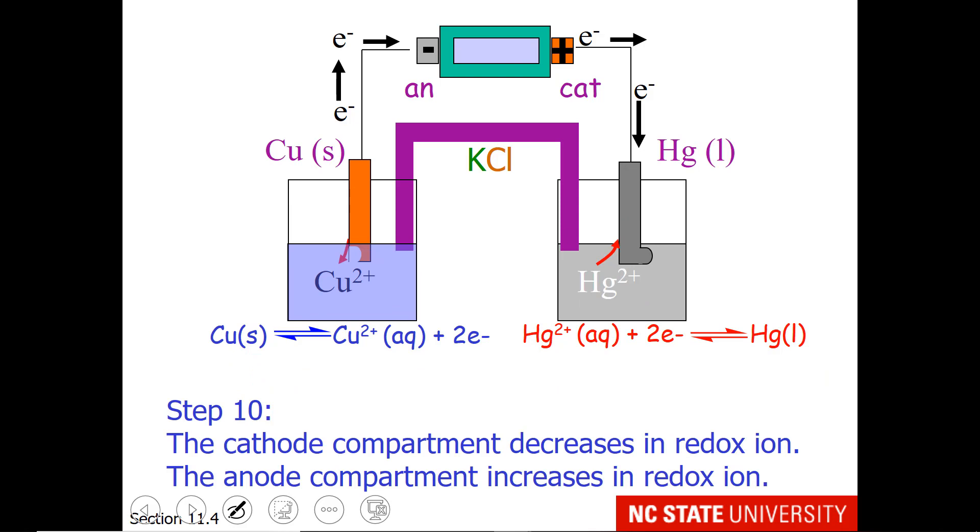Last part of this, the cathode compartment decreases in redox ion. If we look at this, our mercury 2+ is reacting away, so our reactant is disappearing. The anode compartment increases in redox ion because we are making the cation copper 2+.